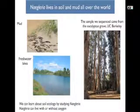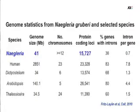Naegleria can be found in mud and wet soils all over the world. If you take pretty much any wet mud soil sample, you can probably find Naegleria in it. The Naegleria genome is 41 megabases, which is pretty small for a genome, but it contains around 16,000 genes — about two-thirds the number of genes in the human genome. So even though it's a really small genome, it has a lot packed in.